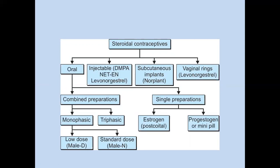Now, coming to oral contraceptives — these are combined formulations. In combined pills, they are either monophasic or triphasic. In monophasic, the low-dose preparation is Mala-D and the standard dose is Mala-N. In single-hormone oral preparations, it is either estrogen alone or progesterone alone; the progesterone-only preparation is called Minipill.